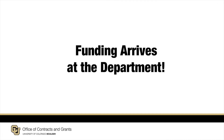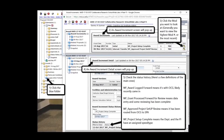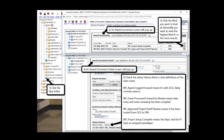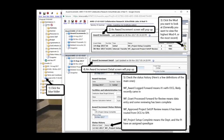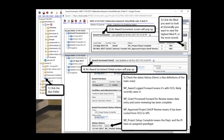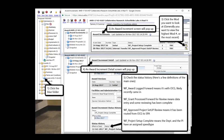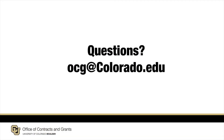Additionally, an email notice will go out to both the PI and the fiscal manager regarding the speed type creation. If there seems to be a delay, one great resource is InfoEd — look to see if the mod has been routed to CCO. Contact your grant or contract officer if it appears they are still working on it.